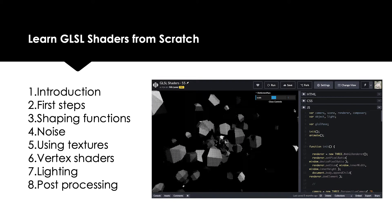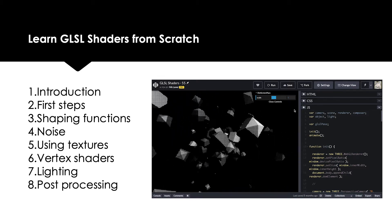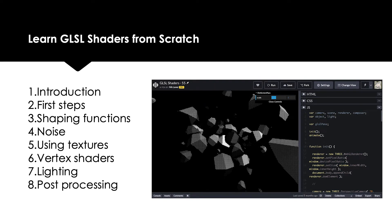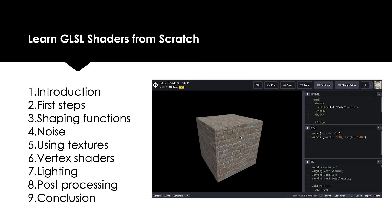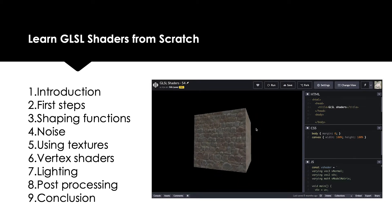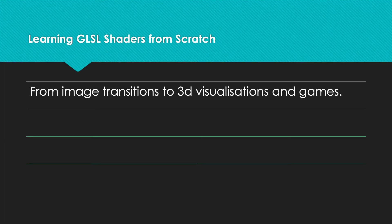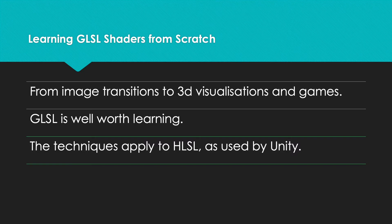The 3GS library has several shaders that you can apply after the initial screen is rendered. We call this post processing, and Section 8 introduces you to the amazing possibilities of using this technology. Finally, in Section 9 we will review all the amazing things you've learned. Whether you want to create amazing image transitions for a website or you're making a huge multiplayer 3D game, GLSL is so worth learning. The methods of shader development apply even if you work in another shading language like HLSL, as used by Unity.